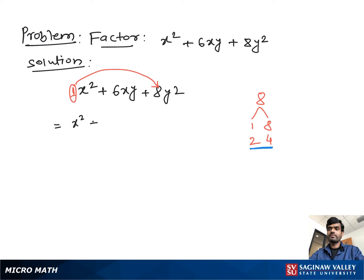So we can write x² + 2xy + 4xy + 8y². Now from the first pair we take out x as common and write x(x + 2y), and from the second pair we take out 4y as common, giving us 4y(x + 2y).